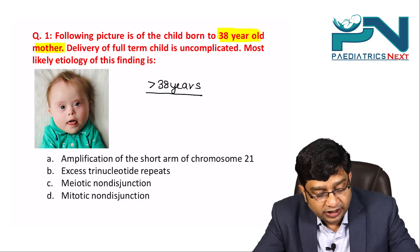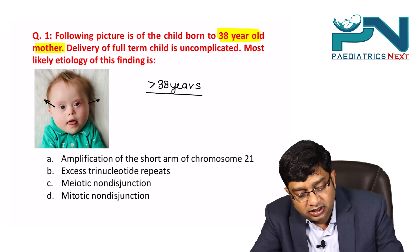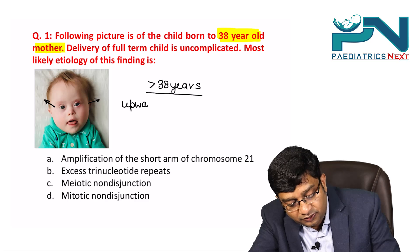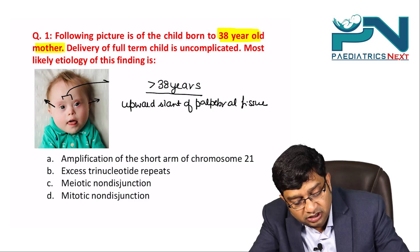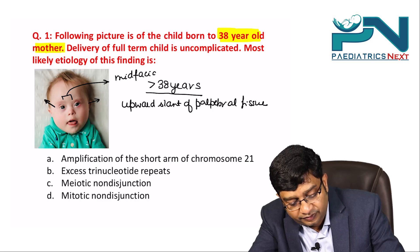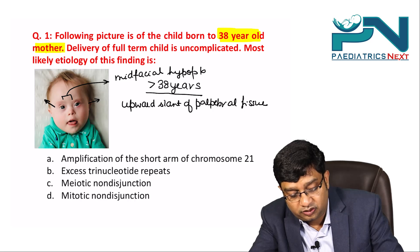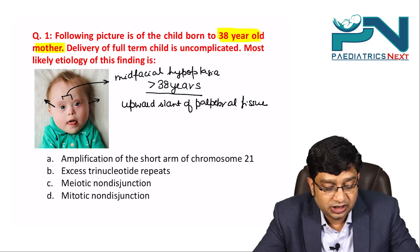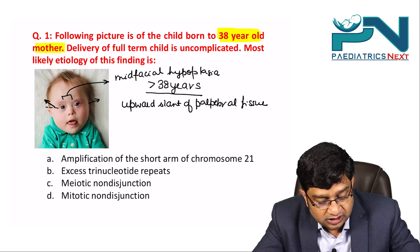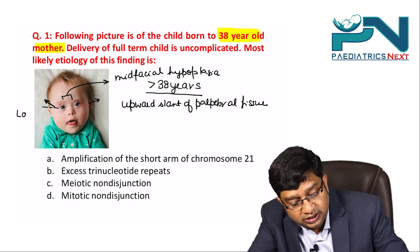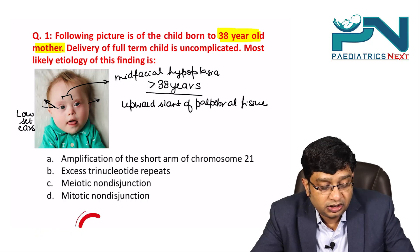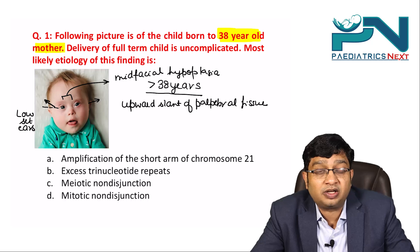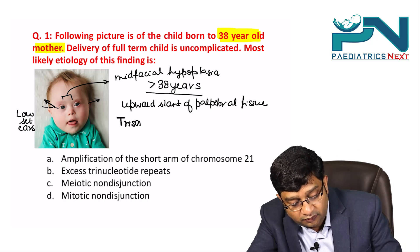First we need to make a diagnosis. Looking at the picture, there is an upward slant of the palpebral fissure, mid-facial hypoplasia, and a depressed nasal bridge. There are also low-set ears, an open mouth, and a protruding tongue.